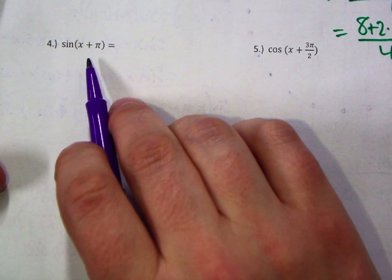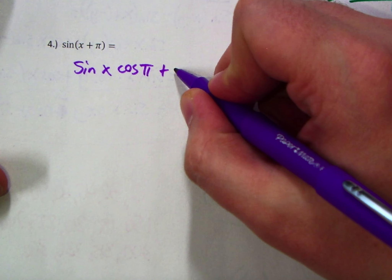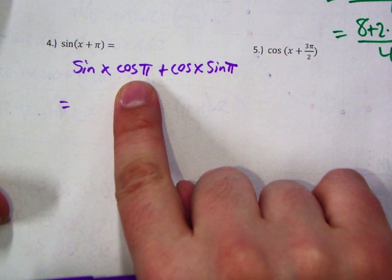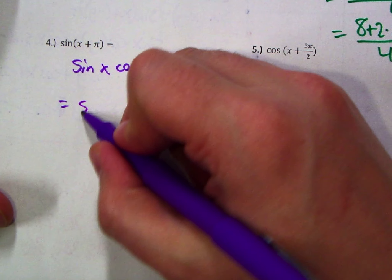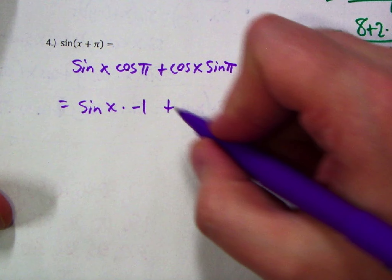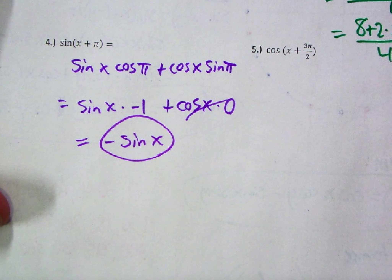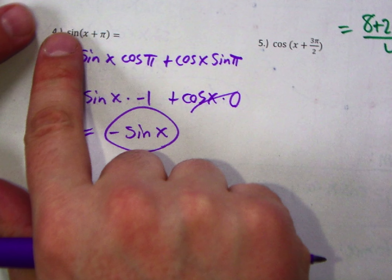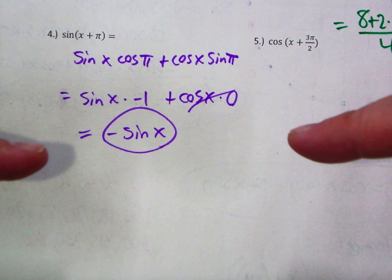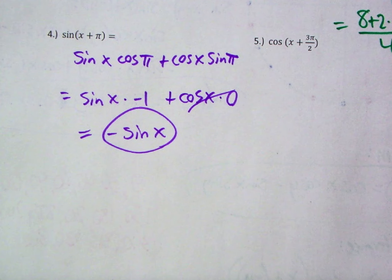For sine of x plus π, this is an addition formula, so: sine of x cosine of π plus cosine of x sine of π. Cosine of π — the x-value at π radians — is negative 1, so that term becomes sine of x times −1. Sine of π — the y-value at π radians — is zero, so the second term reduces to zero. We're left with negative sine of x. Adding a half rotation to sine of x puts you on the opposite side of the circle, giving opposite y-values.